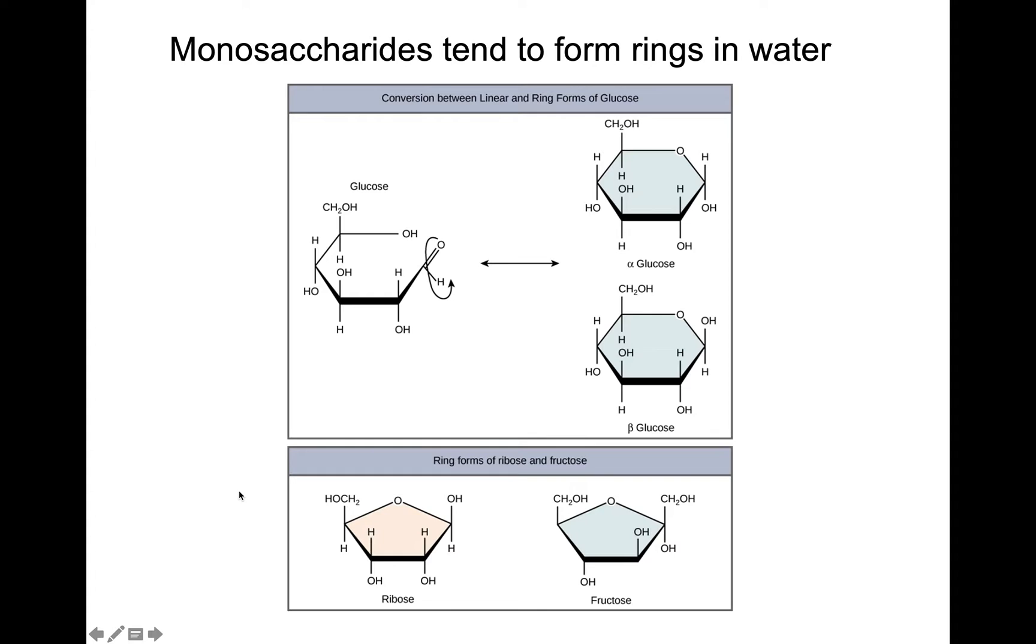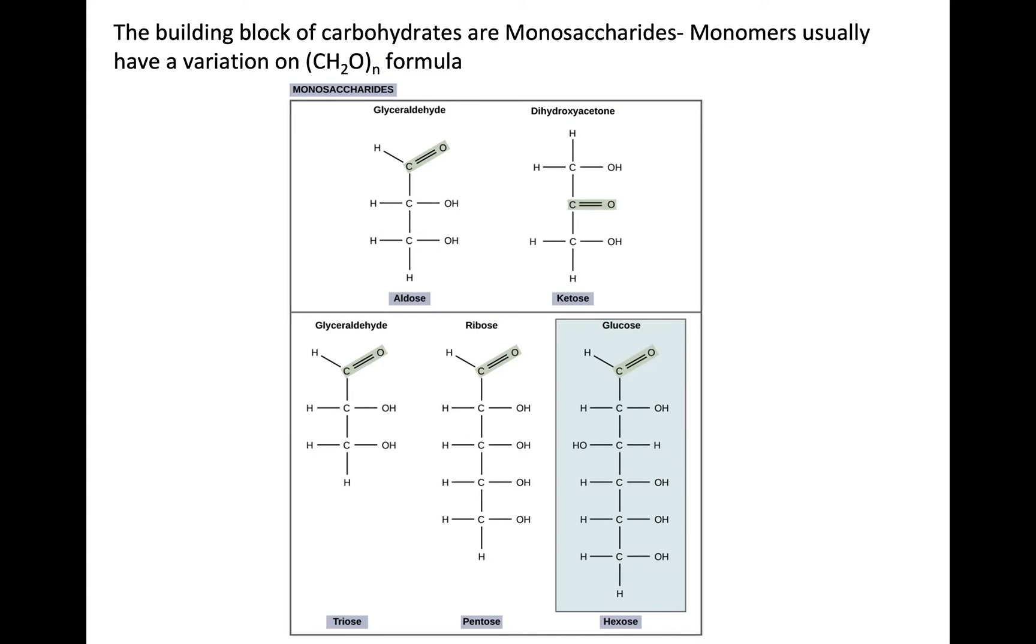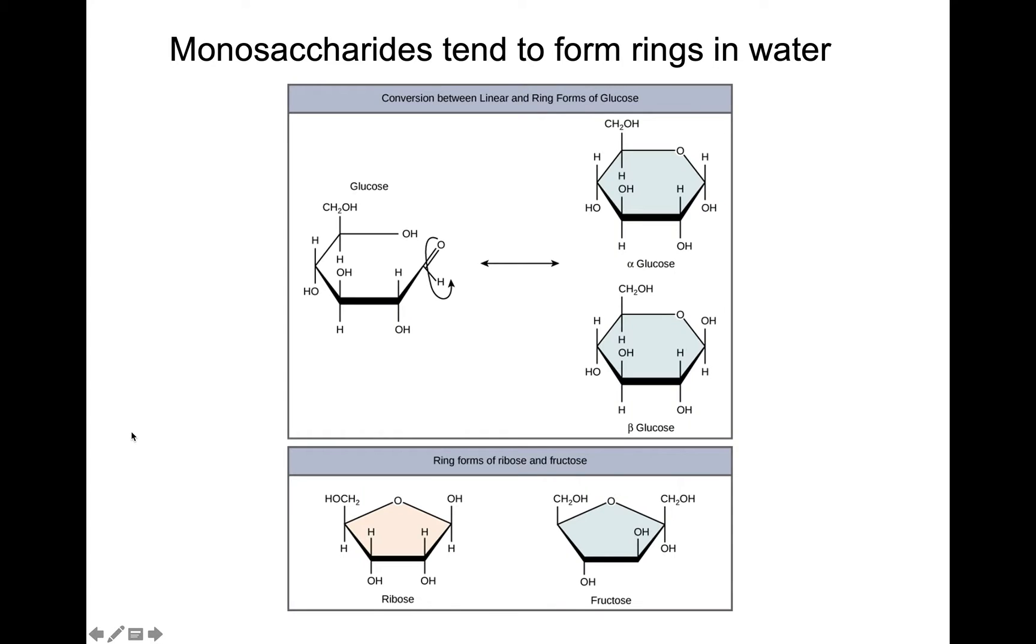Now we're showing the structure of monosaccharides in line form like this but actually in solution monosaccharides tend to form rings. So what happens is that this linear structure closes and forms a ring.